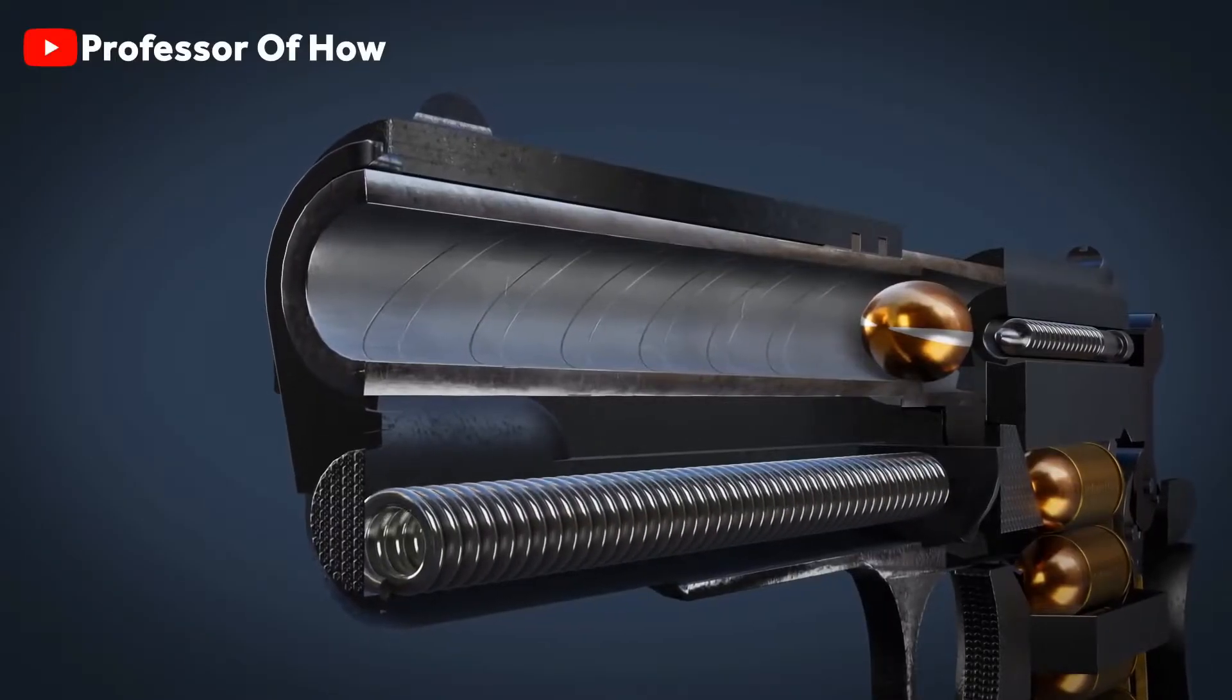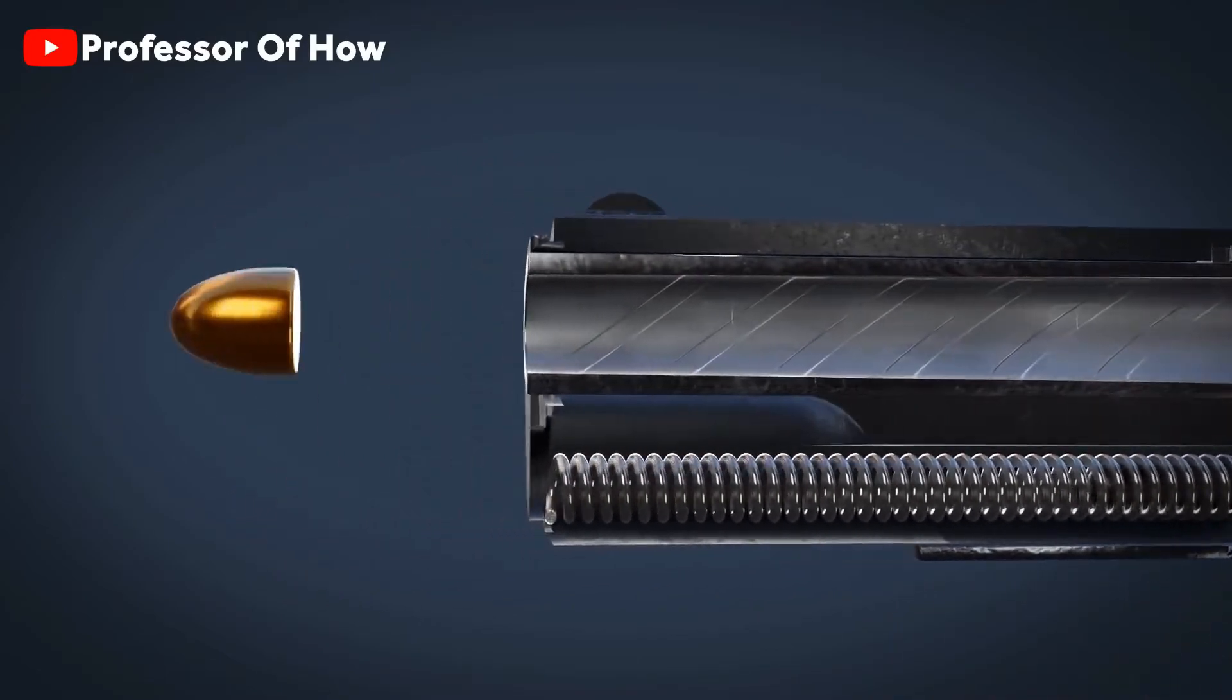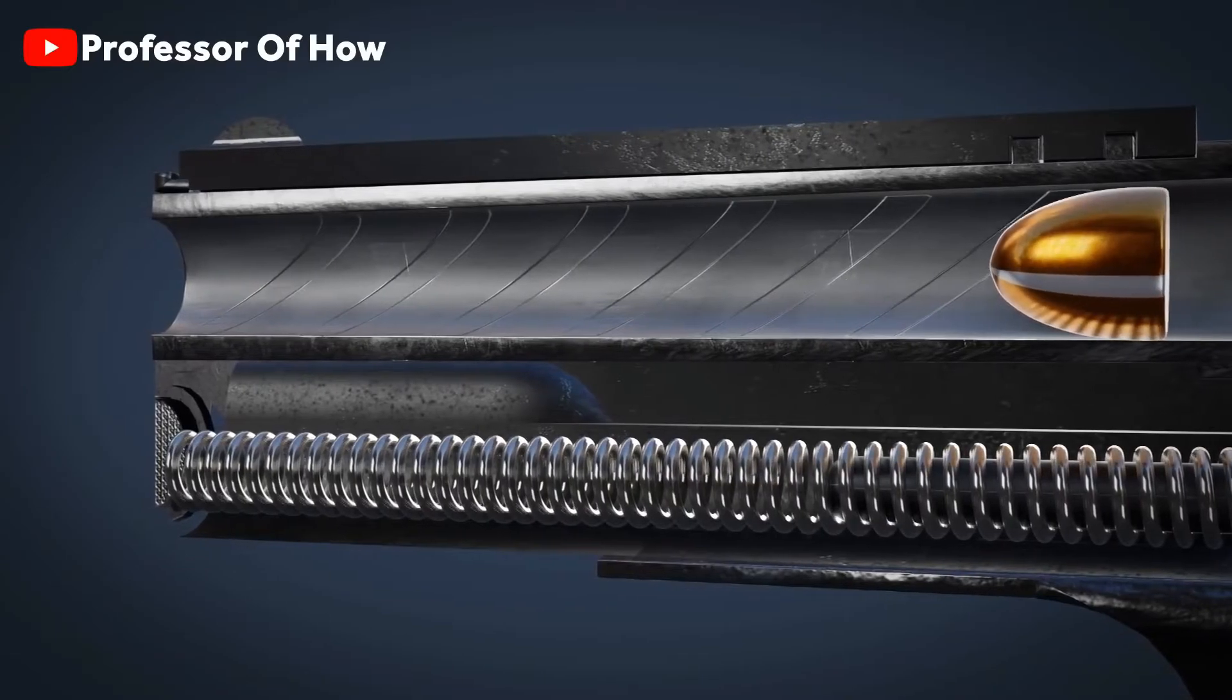Many people don't know that this bullet never comes out straight from the barrel. Instead, there are twisted grooves inside the barrel. Because of which, the bullet comes out spinning only.